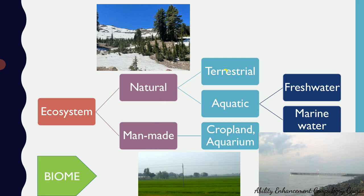Natural ecosystems can be further divided into terrestrial and aquatic based on where they are found. Terrestrial ecosystems are found on land, like snow-capped mountains. Aquatic ecosystems are found in water, and can be divided into freshwater and marine water. Freshwater ecosystems are those with no excess salt concentration, whereas marine water ecosystems — such as beaches, oceans, and seas — have a higher concentration of salty water.